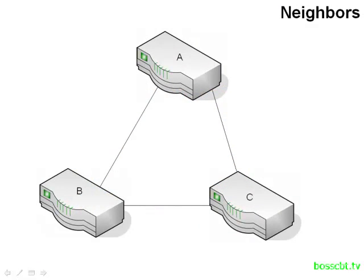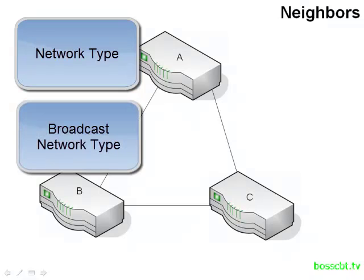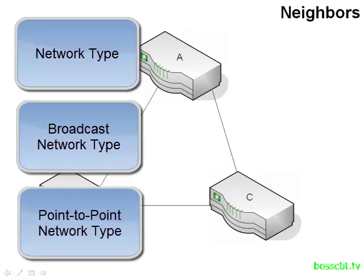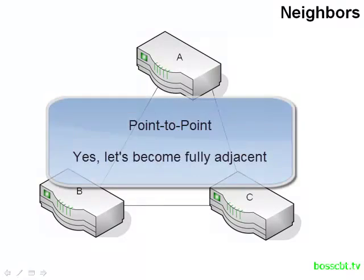The state of a neighbor depends on how the link to that neighbor is defined, and in OSPF this definition is known as a network type. One network type is known as broadcast — broadcast frames are supported, like on Ethernet, and many devices are connected to the same segment. Another network type is point-to-point, where only two devices are connected to a single network segment. Each of these network types has a default behavior. On a point-to-point network type, the routers by default will proceed to exchange their link state databases and eventually become fully adjacent to each other.